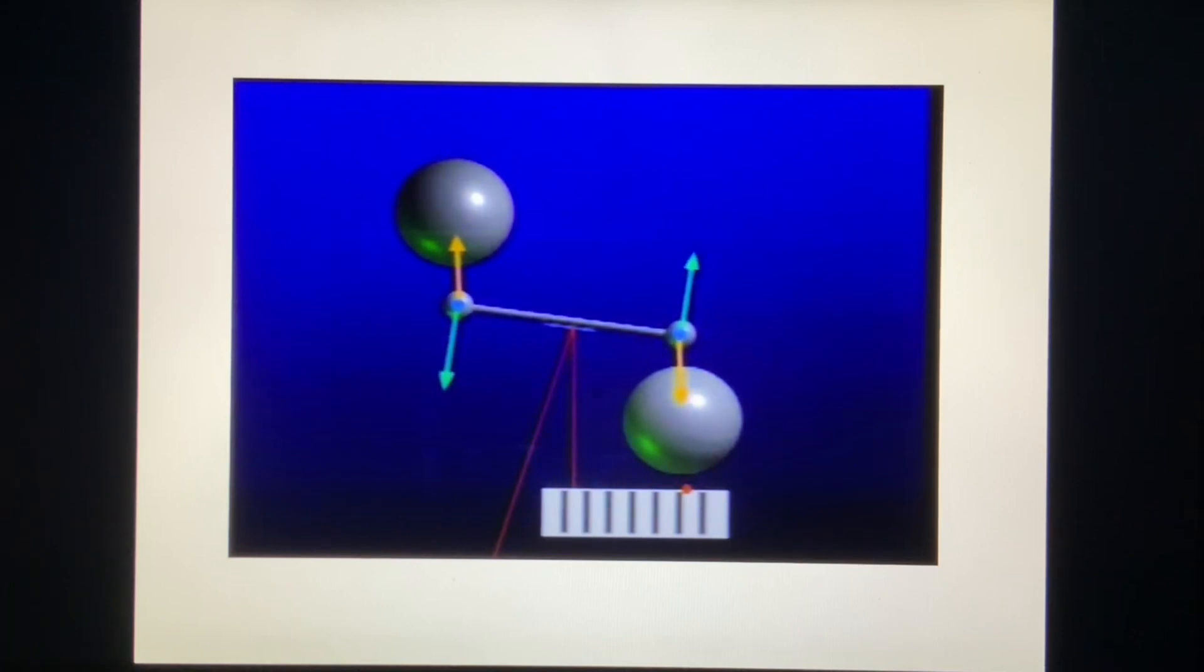They oscillate back and forth, eventually reaching a new equilibrium position where the forces are once again balanced. The angle between the two equilibrium positions can be used to calculate the gravitational force between the spheres, and thus the gravitational constant.